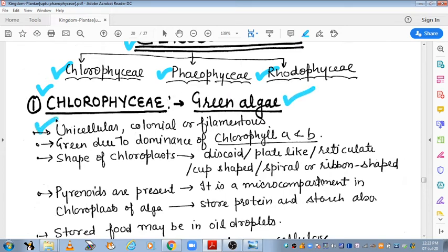In general characteristics, Chlorophyceae are unicellular, colonial, and filamentous forms. They exist in colonies and some are filamentous structures of algae.